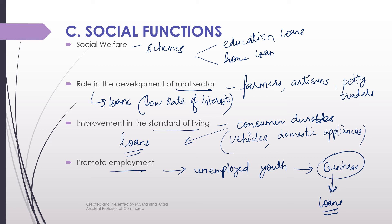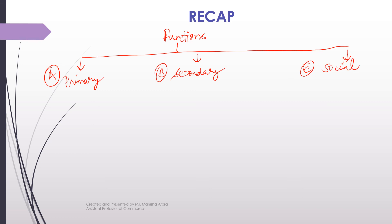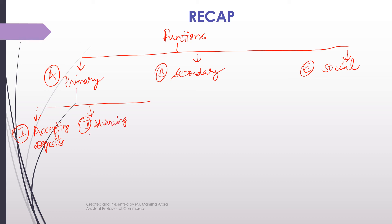With this, the three categories of functions of commercial banking are complete. Let's quickly recap all the functions. The functions of commercial banks are divided into three categories: A — primary functions; B — secondary functions; and C — social functions. In primary functions, three categories were discussed: the first is accepting deposits, the second is advancing loans, and the third is credit creation.